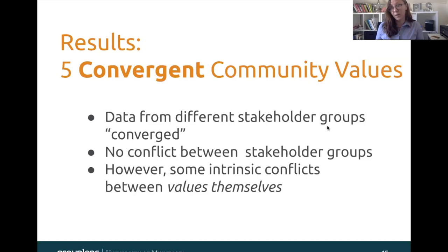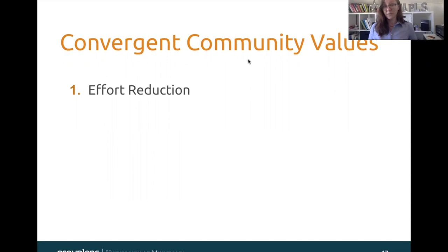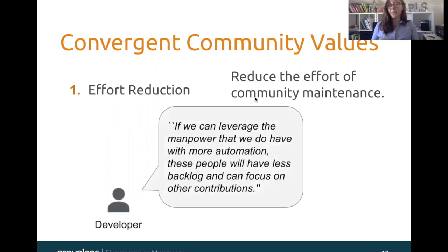These are the five values that emerged: effort reduction, human authority, and positive engagement. Our first value, effort reduction, means that ORS and ORS-dependent systems should be reducing the effort of community maintenance. On Wikipedia, with so many edits coming in every single day, it takes a huge amount of work to make sure those edits are high quality and meeting standards set by the community. As one developer said: if we can leverage the manpower that we do have with more automation, these people will have less backlog and can focus on other contributions.